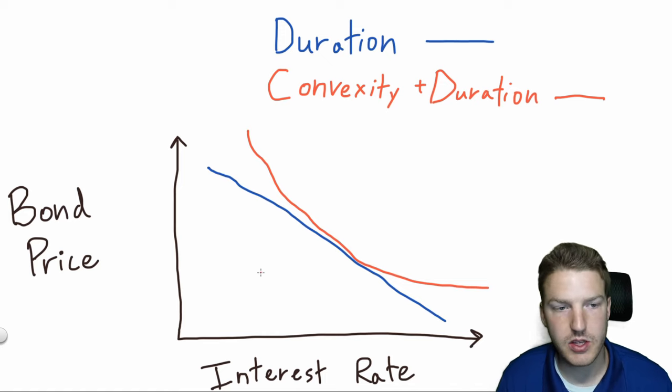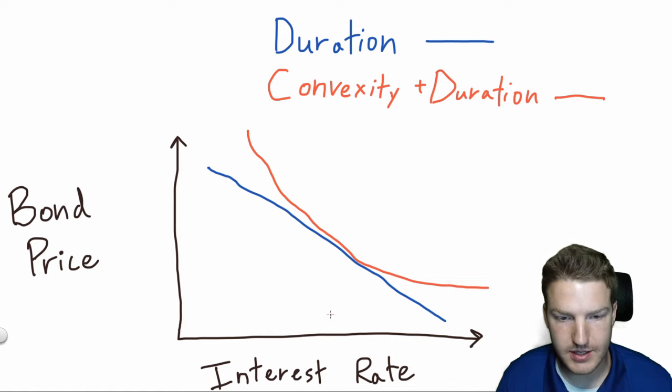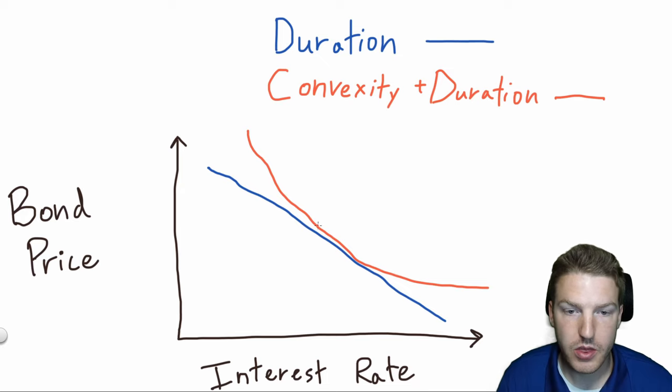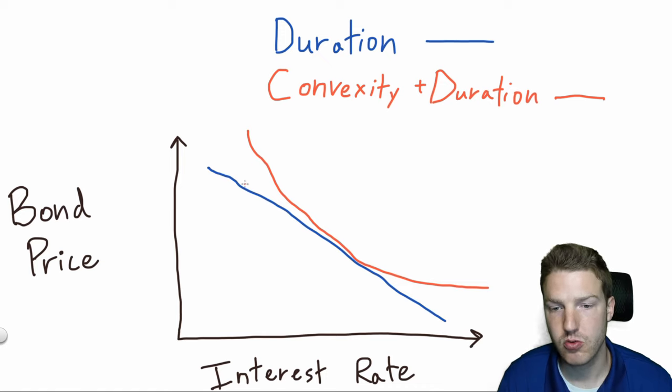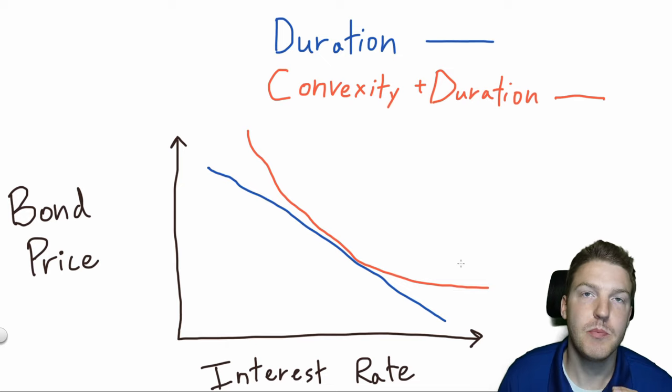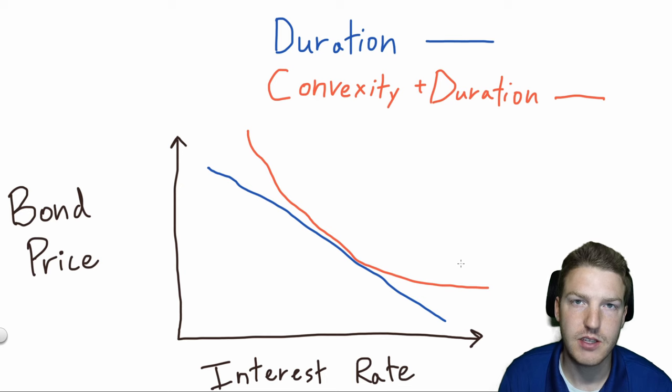And so one thing we'll notice here is that as interest rates decrease, with the orange line, the bond price increases by more than just accounting for duration. But when interest rates increase, the bond price decreases by less than just assuming duration. So it's better to have higher convexity.